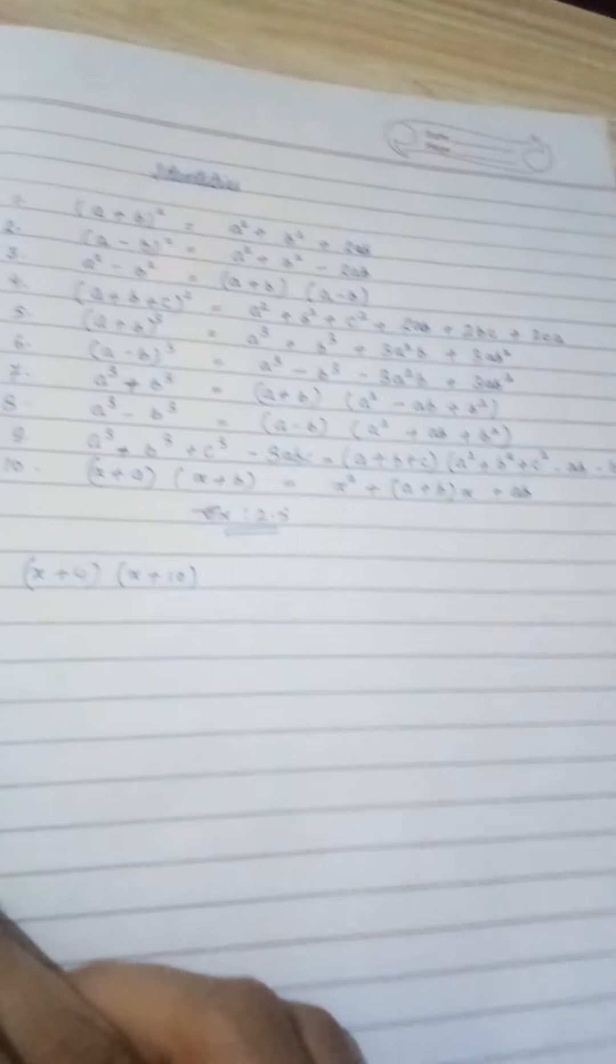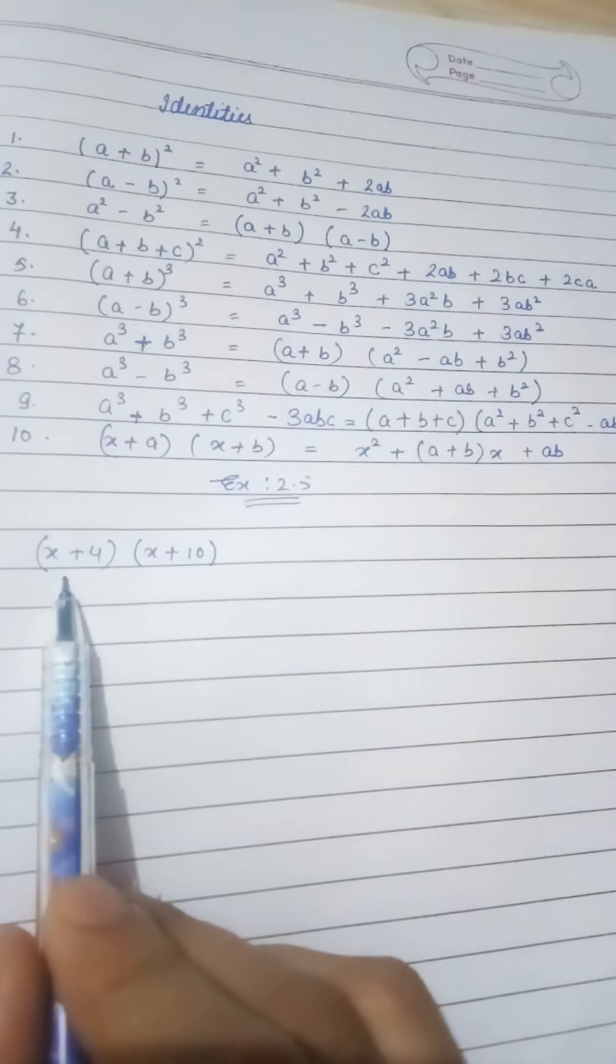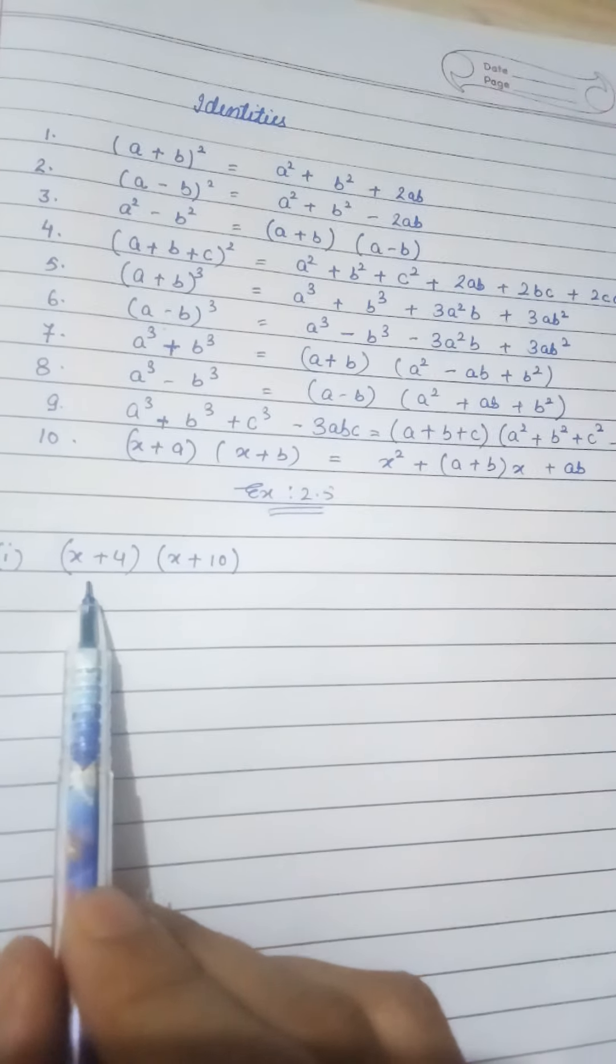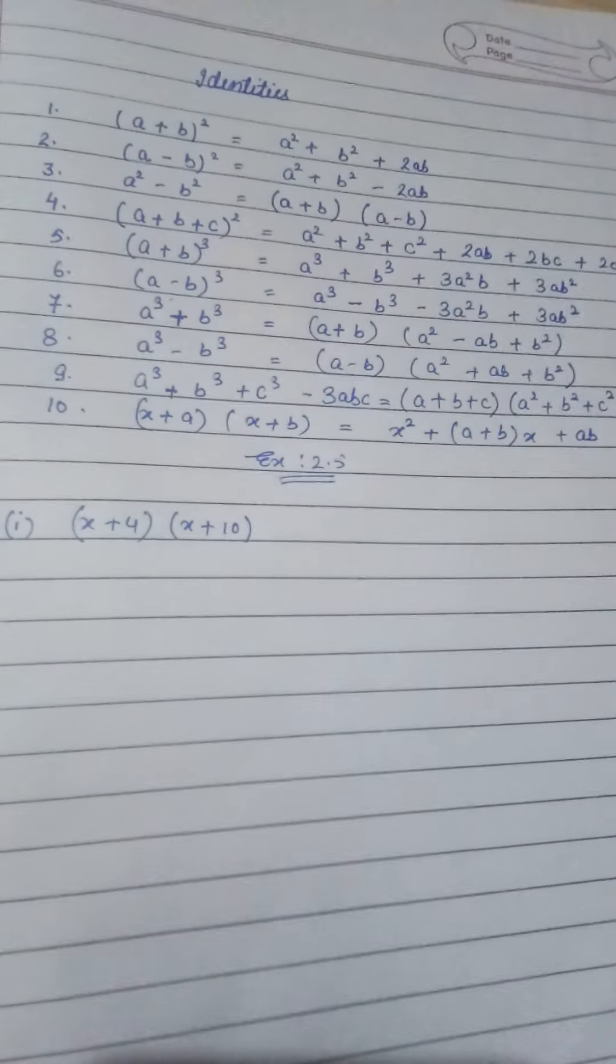So let us start the first sum. That is x plus 4 and x plus 10. You have to use suitable identities to find out the solution of that term.